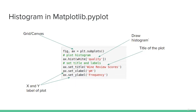Let's visualize this dataset using a histogram in matplotlib. First, we need to set our canvas or grid by calling the plt.subplot function, which enables us to draw many plots in the same figure. After setting the canvas, we plot the histogram using the hist function called on the axes object, specifying the quality column we want to visualize.